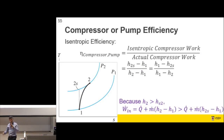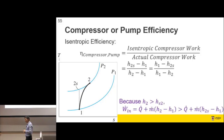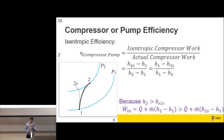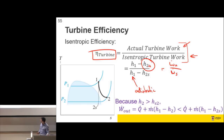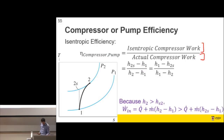Now let's flip to compression. For a compressor, you have to put in more work than ideally required. So isentropic efficiency for a compressor is: ideal work in divided by actual work in. This is a smaller number divided by a larger number, giving efficiency less than one. For a turbine, actual is on top and ideal on the bottom; for a compressor, ideal is on top and actual on the bottom.